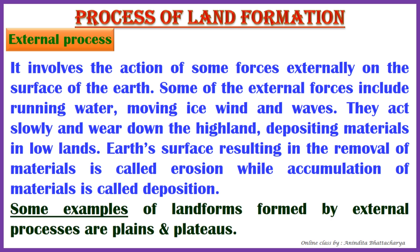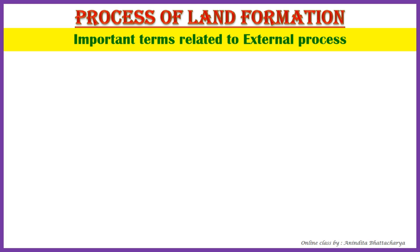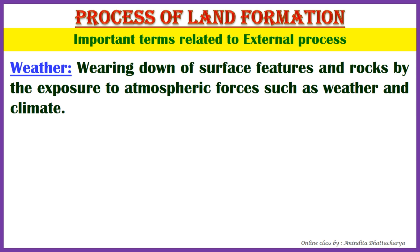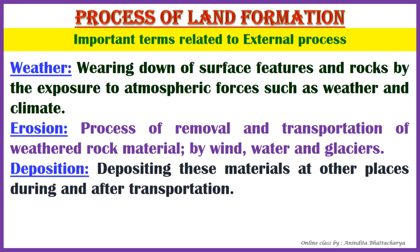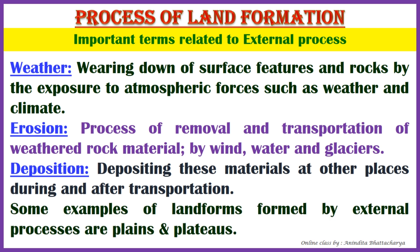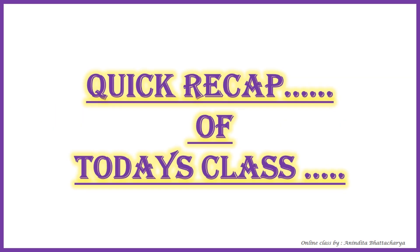Some important terms associated with the external process are: first, weathering — the wearing down of surface features and rocks by exposure to atmospheric forces such as weather and climate. Second, erosion — the process of removal and transportation of weathered rock material by wind, water, and glaciers. Third, deposition — depositing this material at other places during and after transportation. Examples of landforms formed by external processes are plains and plateaus.